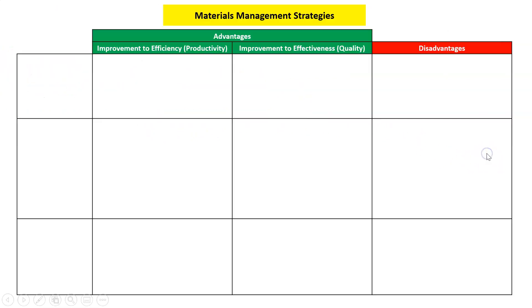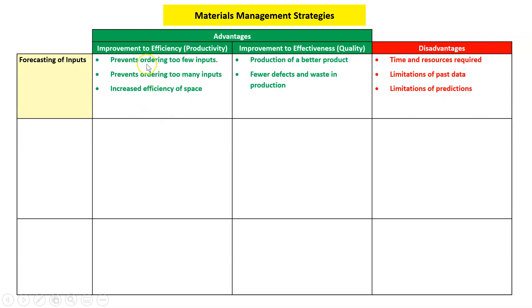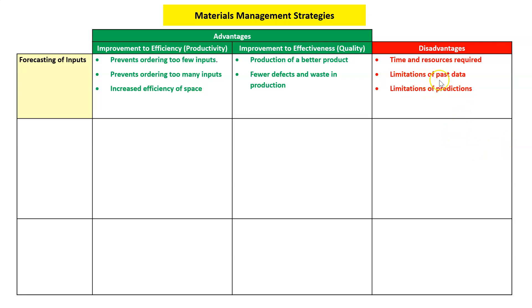Now the pros and cons: what are the advantages to efficiency and effectiveness and what are the disadvantages? Forecasting prevents ordering too few or too many. Too few and we run out and production stops; too many and we don't have enough space. So we increase the efficient use of our space. In terms of effectiveness, we make a better product because we always have the parts and inputs we need, leading to fewer defects and less waste. Disadvantages: a lot of time and resources required, and it's always guesswork — predicting the future based on past data is never 100% right.